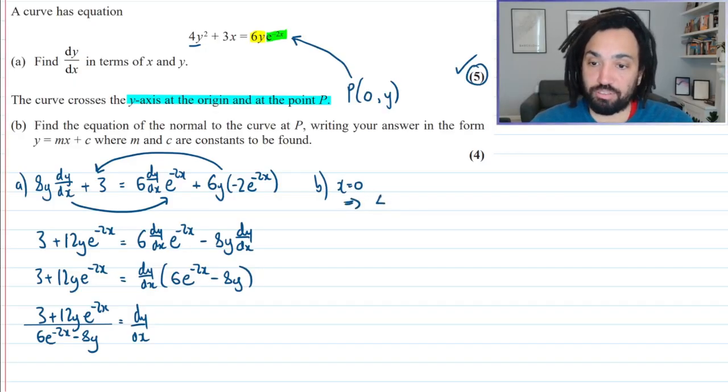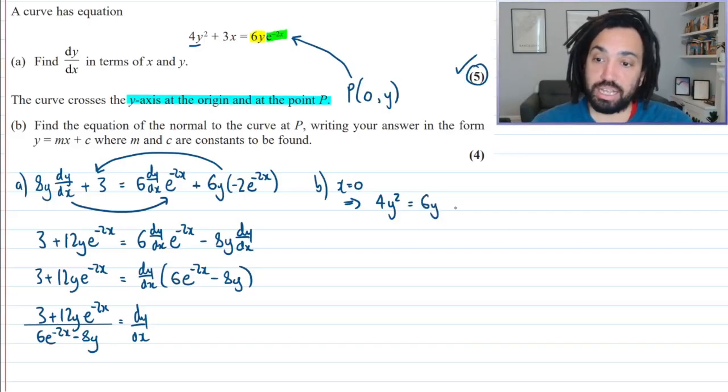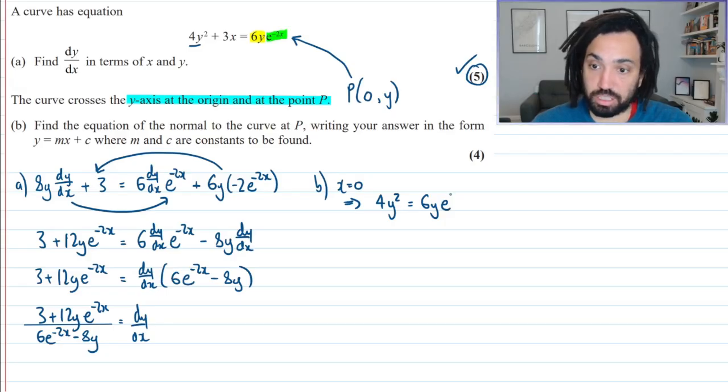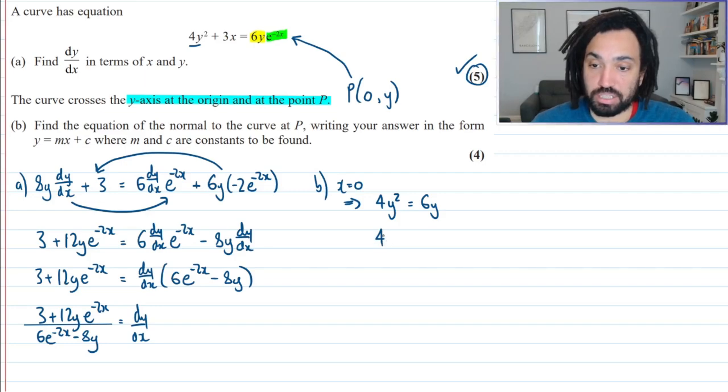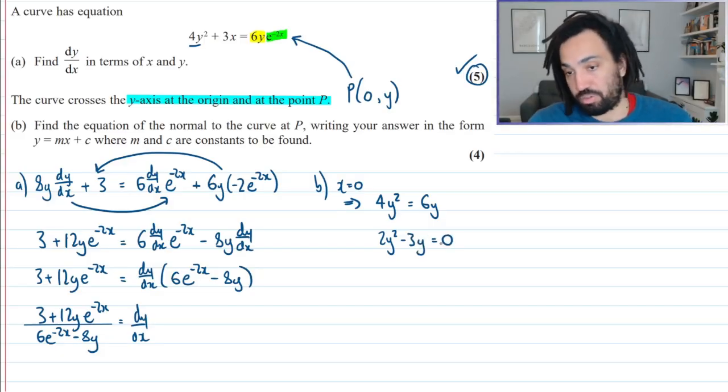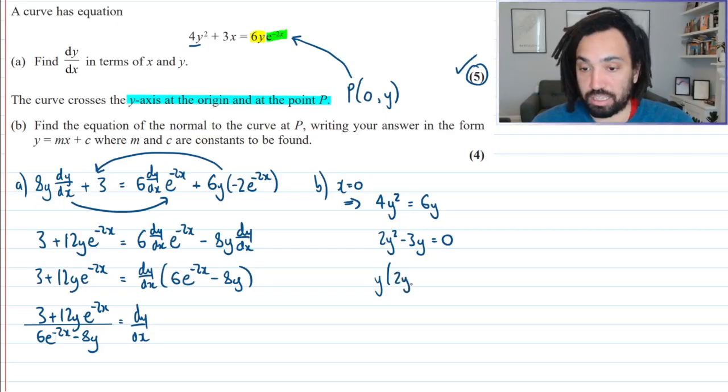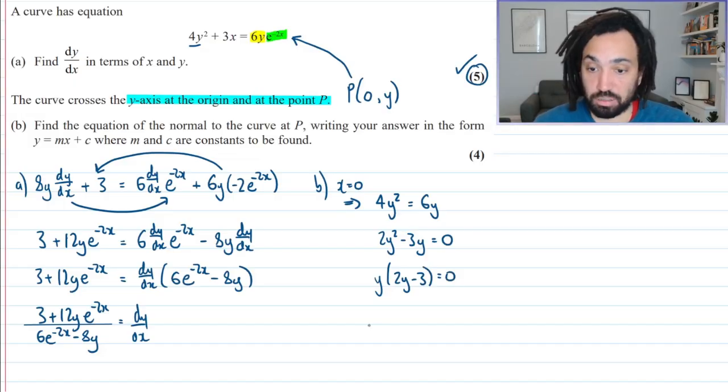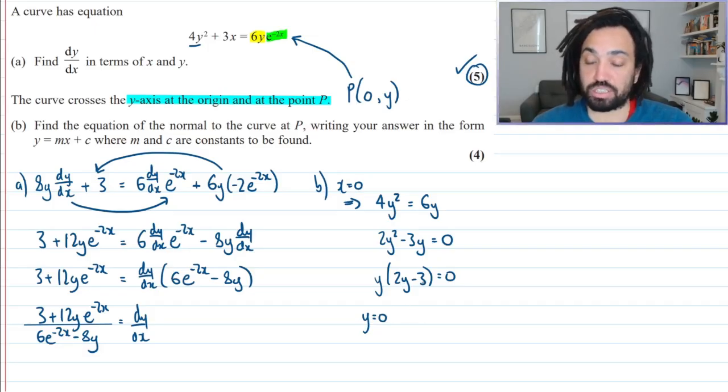So we can write x equals 0. This implies that we have 4y squared plus 3 times 0 is 0. And then we have 6y, and then e to the minus 2 times 0 is just 0, and e to the 0 is 1. This is good because now what it means is I can divide by 2 and write it all on one side like that. So divide by 2 and then move the other term over, and that means I can factorise out a y.